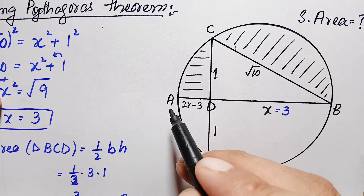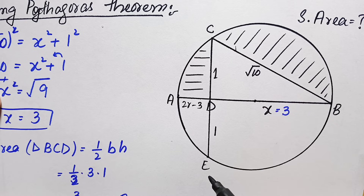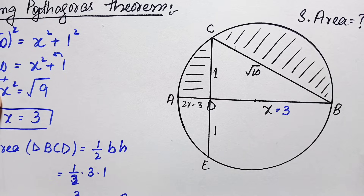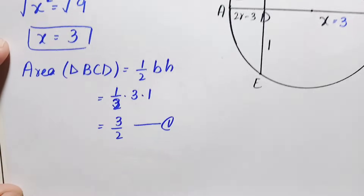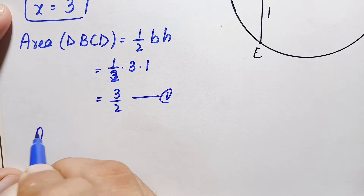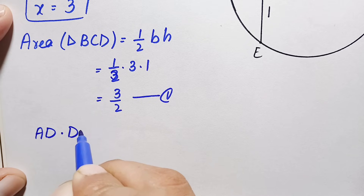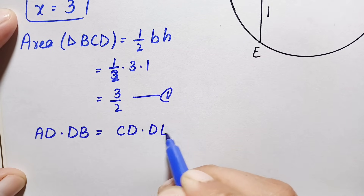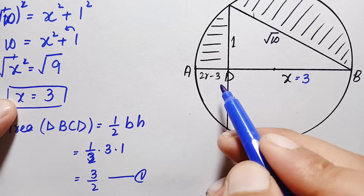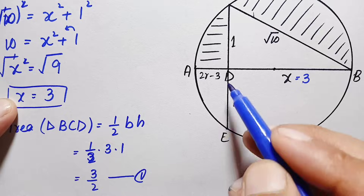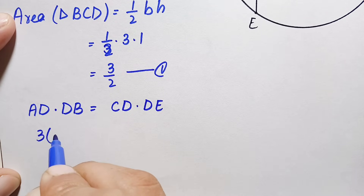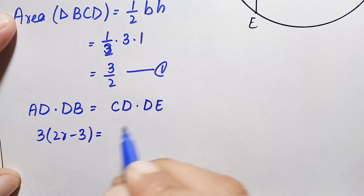In this figure we have two chords intersecting each other: chord AB and chord CE. We will use the intersecting chords theorem, which states that the product of two segments of one chord equals the product of two segments of the other chord. From this figure we can write: AD times DB equals CD times DE. We have AD equals 2r minus 3, DB equals 3, CD equals 1, and DE equals 1.